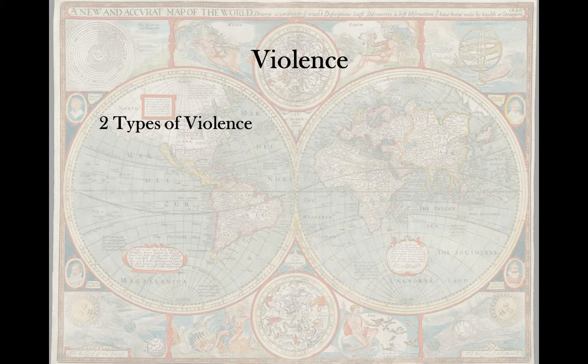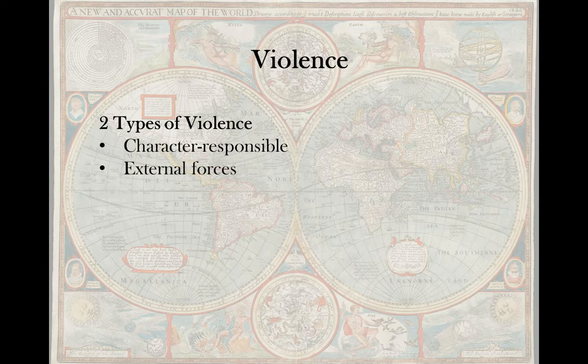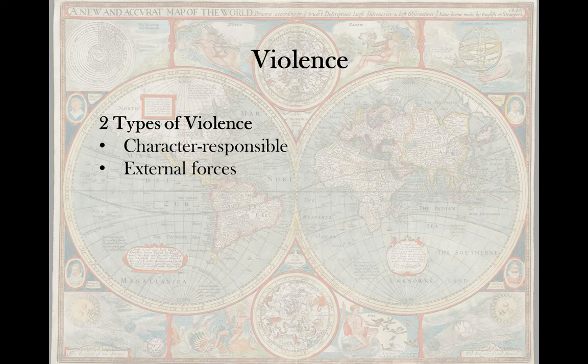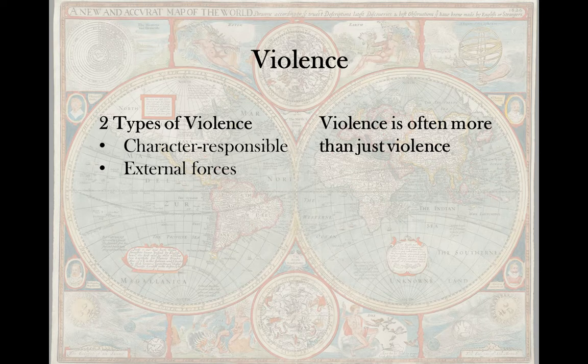We also have violence to deal with. In violence as symbolism, we typically see two types: character-responsible violence, where some character perpetrates violence, and external forces — for instance, out of nowhere a meteor strikes somebody down or gives them superpowers. Both types can often mean something bigger. Violence is often more than just violence; it can be symbolic.